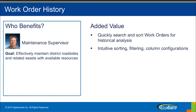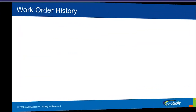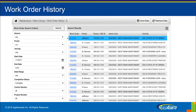The new work order history screen benefits the maintenance supervisor. It allows them to quickly search for and view closed work orders for backwards-looking analysis of the work performed by the crews. The screen allows for defining search criteria, which can include the whole district or a subset of it, defining an activity type, a specific route or section, and a time frame to be analyzed. Once the results are displayed, the details of a selected work order can be reviewed.